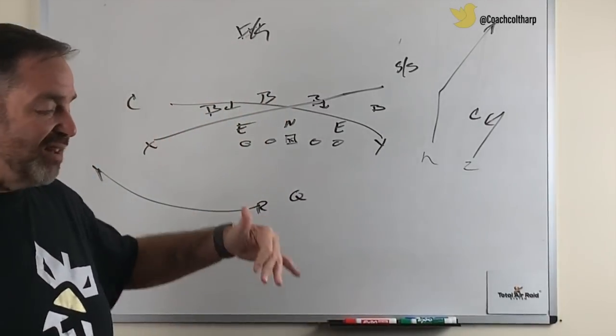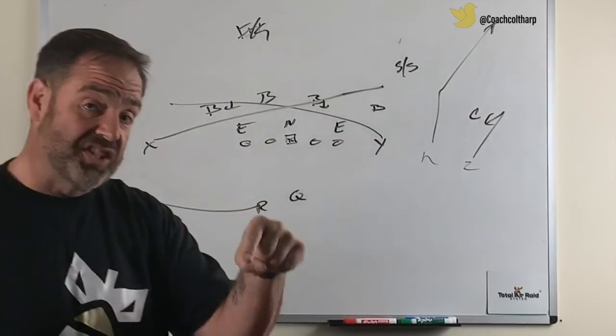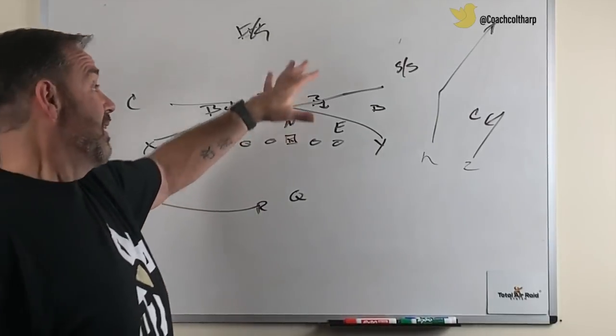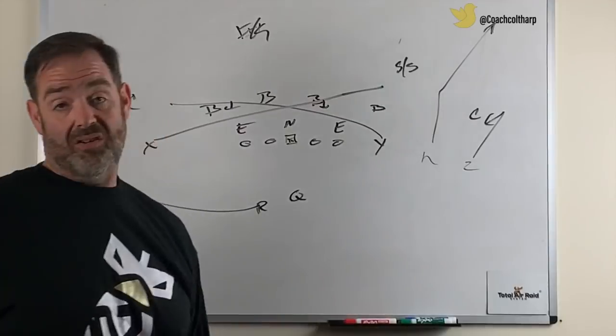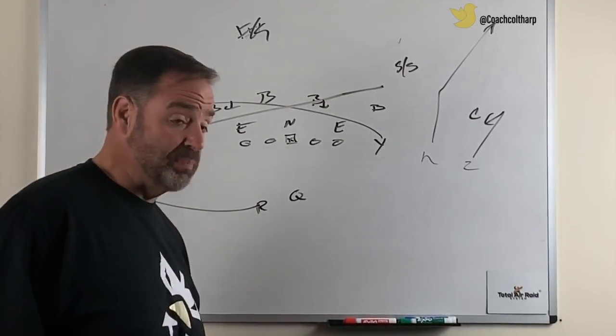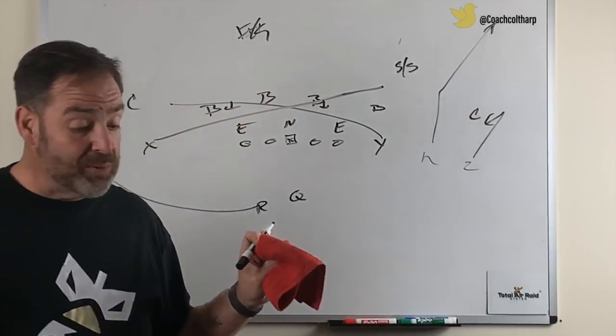If I go 95 Z post, that doesn't mean Z is now the primary. It just tells the quarterback that if the cross isn't there, he can go to Z instead of the curve. Okay. So you got to understand if a tag changes the progression, it's not really a tag.